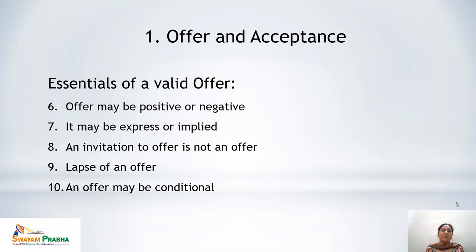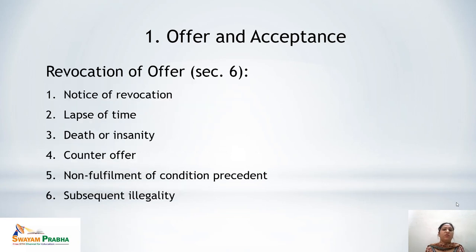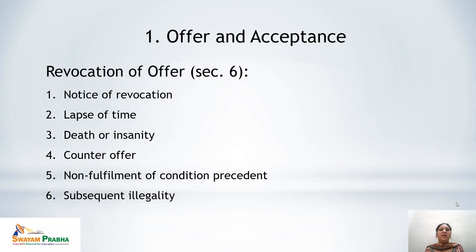We have covered the ten points which make an offer a valid offer. Now let us discuss revocation. Section 6 explains in detail how an offer can be revoked. First, by notice of revocation — the offeror can give notice to the offeree that the offer is being revoked. Second, by lapse of time — once the time given by the offeror lapses, the offer is revoked. Third, by death or insanity of the offeror.